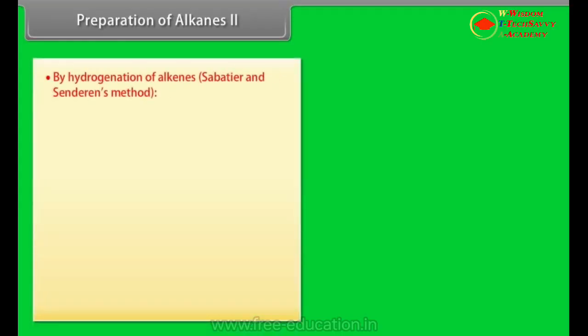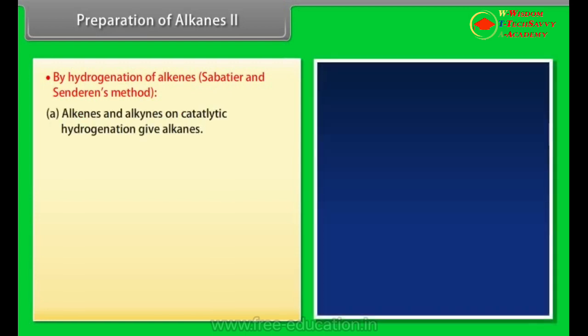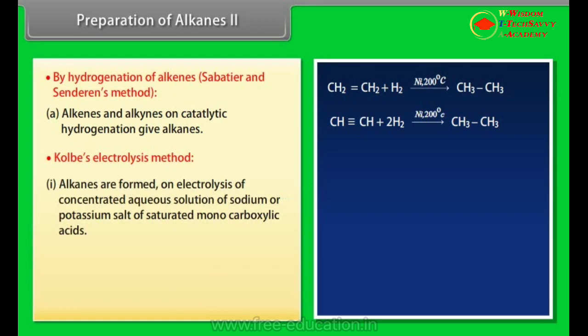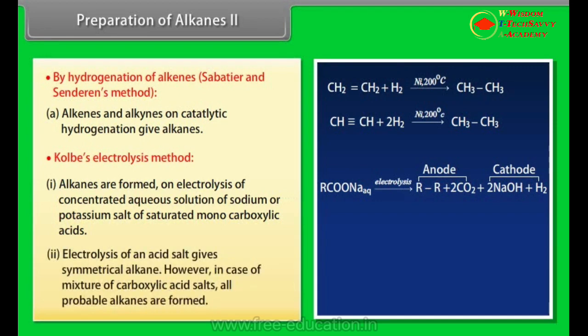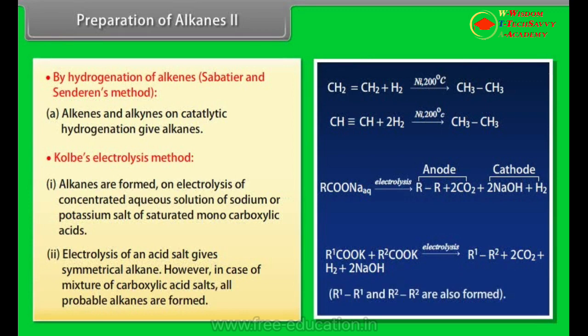Preparation of alkanes Part 2. Hydrogenation of Alkenes - Sabatier and Senderens' Method: Alkenes and alkynes on catalytic hydrogenation gives alkanes. Kolbe's Electrolysis Method: Alkanes are formed on electrolysis of concentrated aqueous solution of sodium or potassium salt of saturated monocarboxylic acids. Electrolysis of an acid salt gives symmetrical alkane. However, in case of mixture of carboxylic acid salts, all probable alkanes are formed.